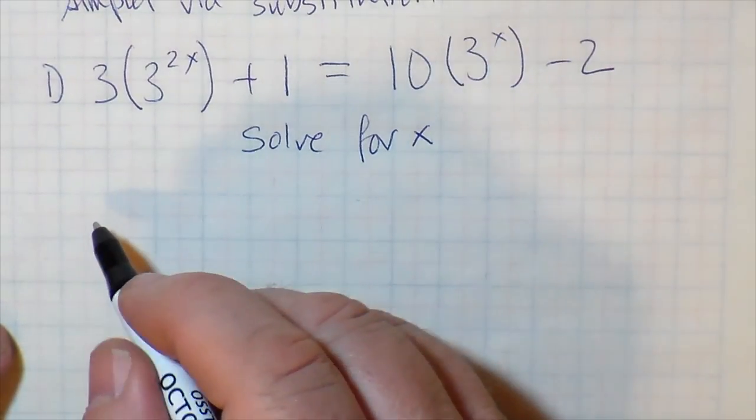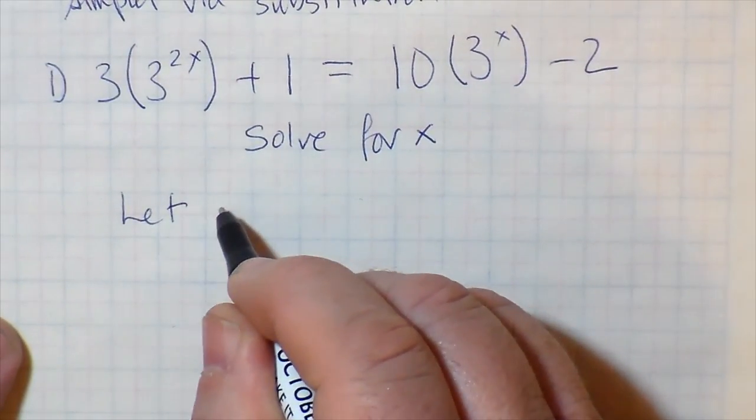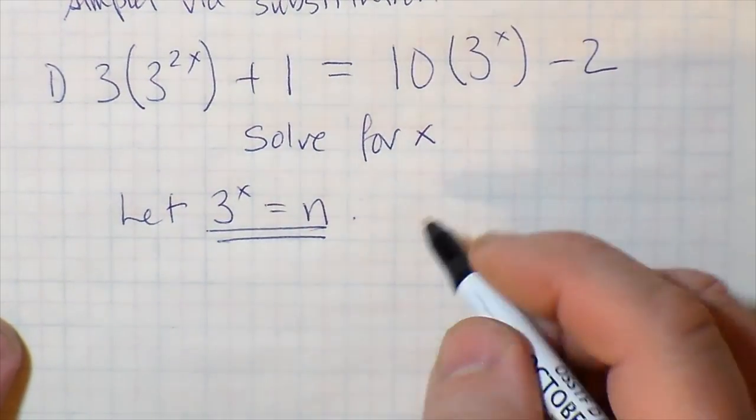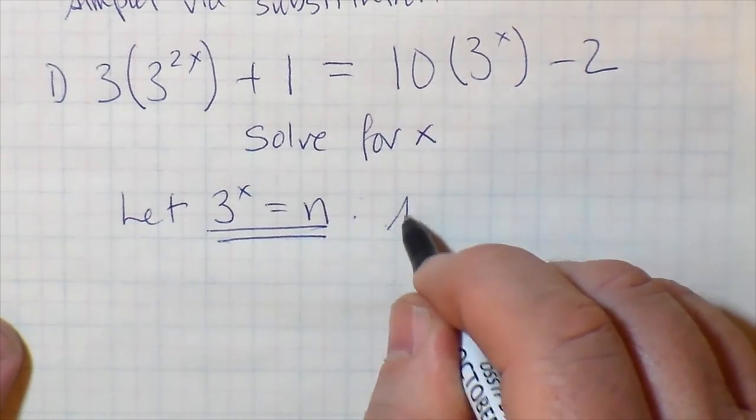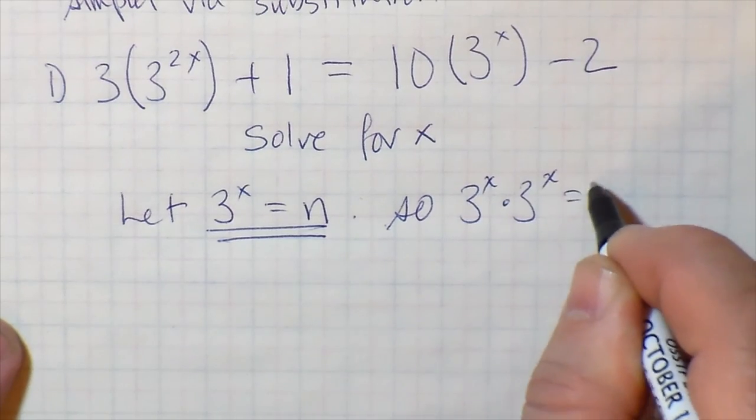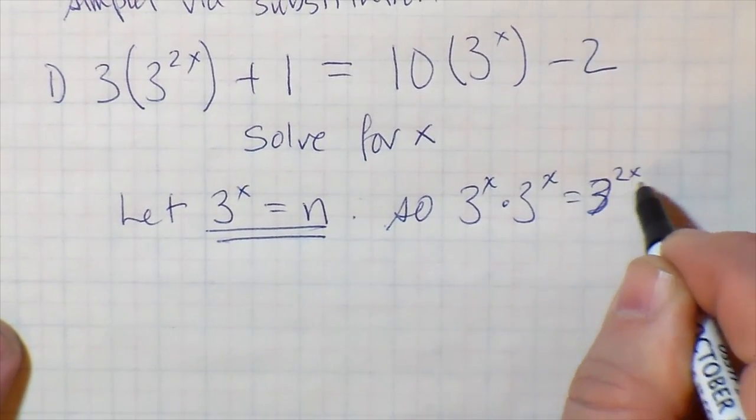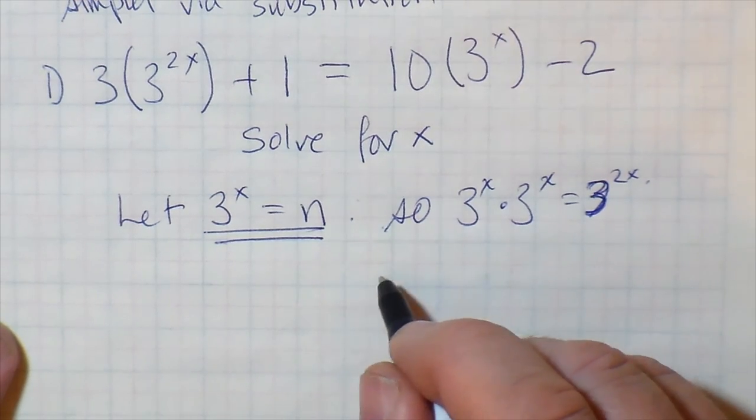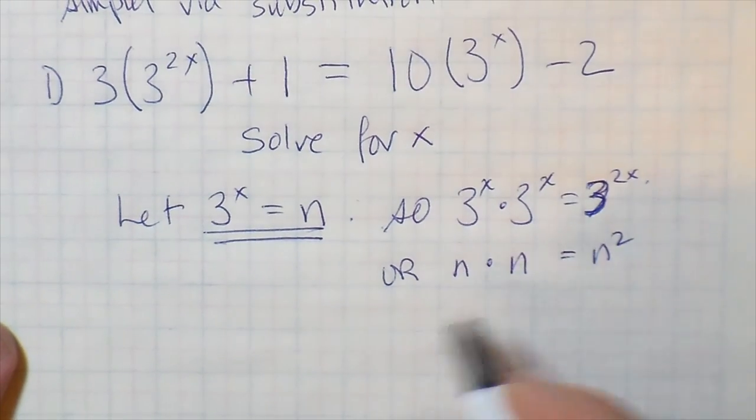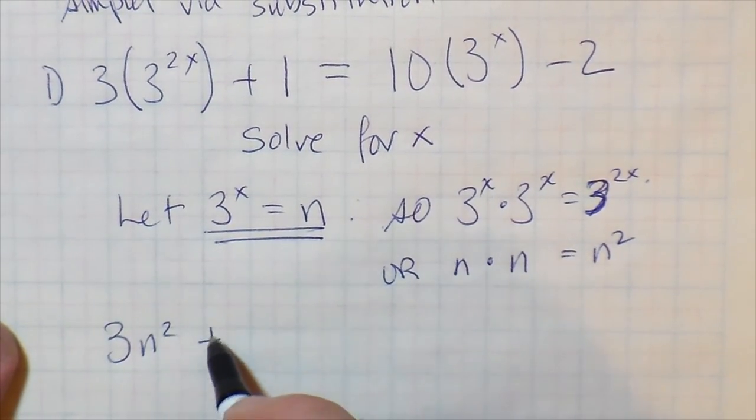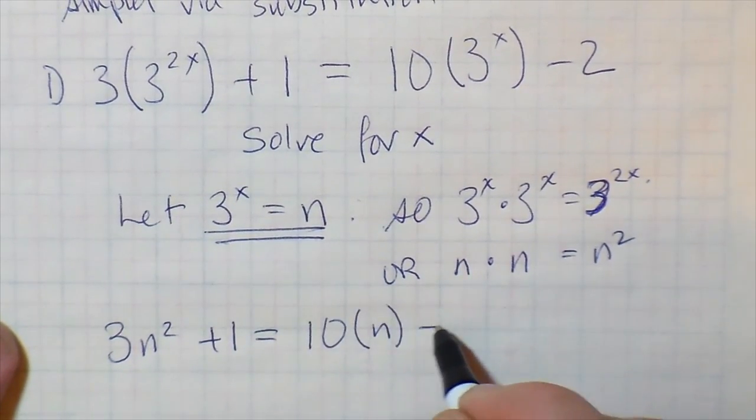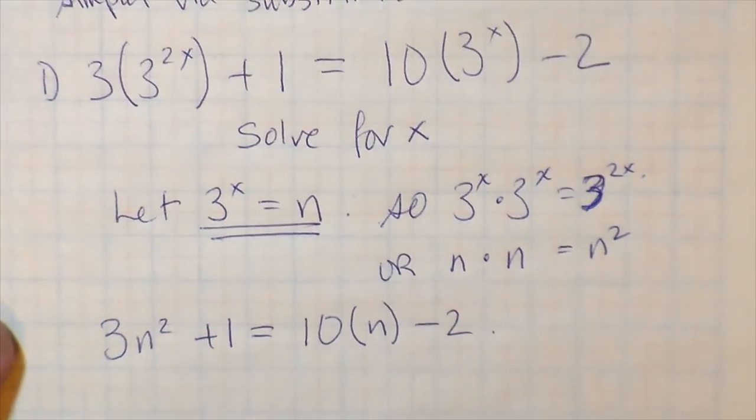It's not so bad if we maybe let n be 3 to the power of x. And we also notice that 3 to the power of x times 3 to the power of x is 3 to the 2x. So that takes care of the 3 to the 2x case. That's like saying n times n is n squared. So in our polynomial, we have 3n squared plus 1, which is equal to 10 multiplied by n minus 2, if we had to rewrite that exponential expression differently.